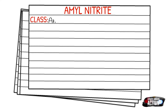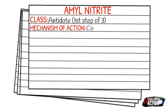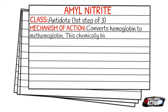Today's medication is called amyl nitrite and it falls under the class of antidote. It's actually the first step of a three-step antidote system. Its mechanism of action is that it converts hemoglobin to methemoglobin. This chemically combines with the cyanide and prevents the toxic effects.